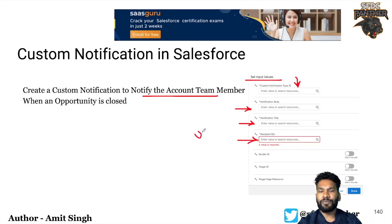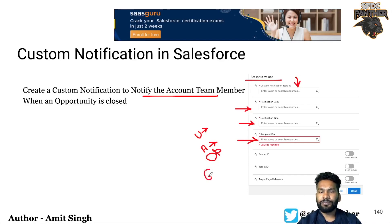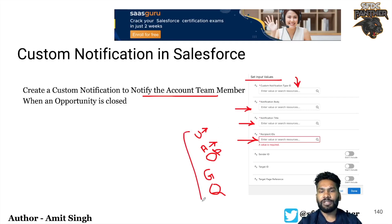Recipient IDs contain the list of IDs. The valid values are user IDs — we can have multiple user IDs. We can also provide an account ID, and it will take all account team members and send the notification to those, so we don't need to query account team members separately. Similarly, providing an opportunity ID finds all opportunity team members, a group ID finds all group members, and a queue ID finds all queue members.